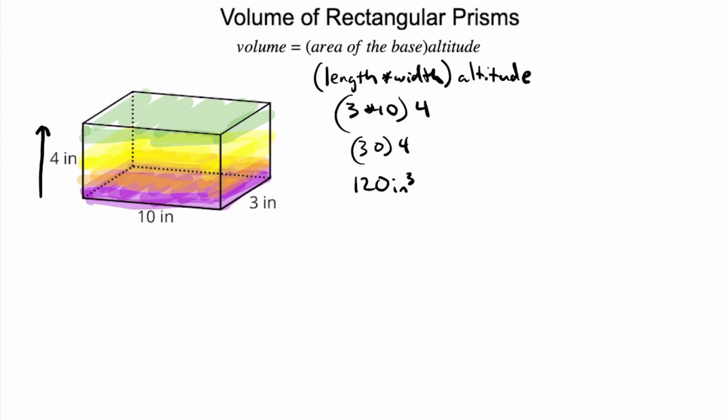We can imagine those are the different layers. When we think of the base, we want to think about we take a layer of the base and we stack another layer of the base on top and another layer of the base on top. This is what you're going to be doing for prisms.